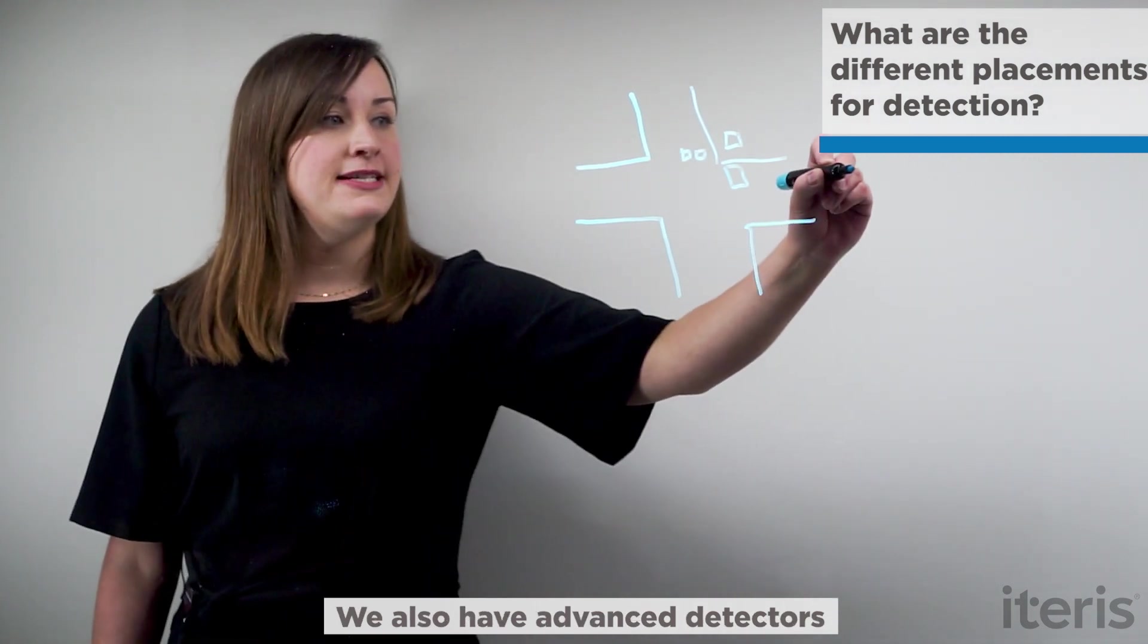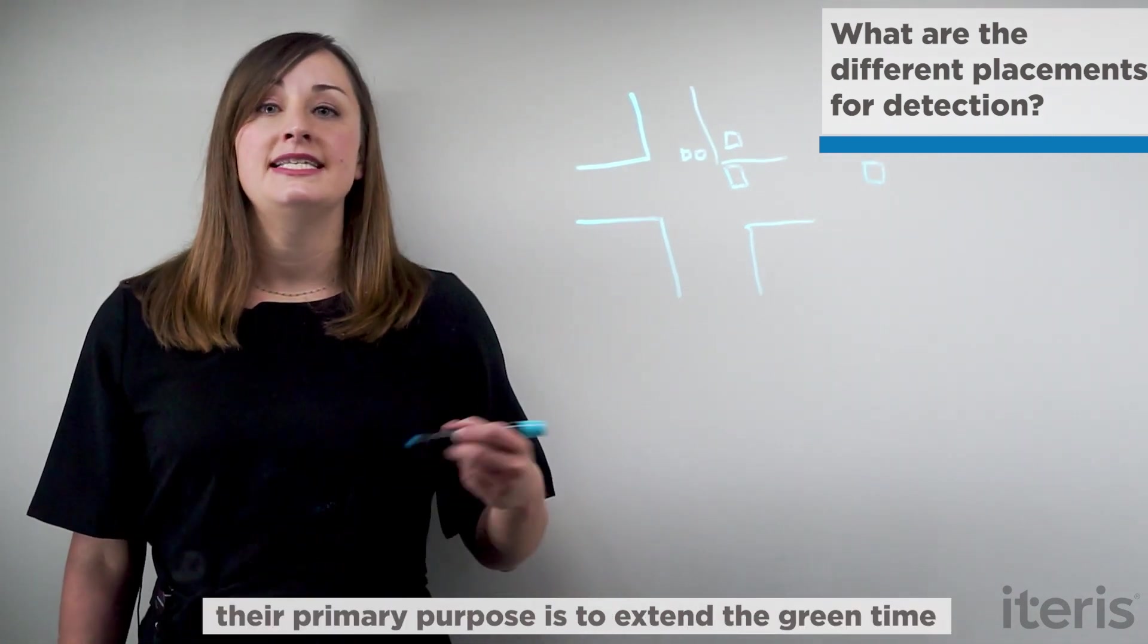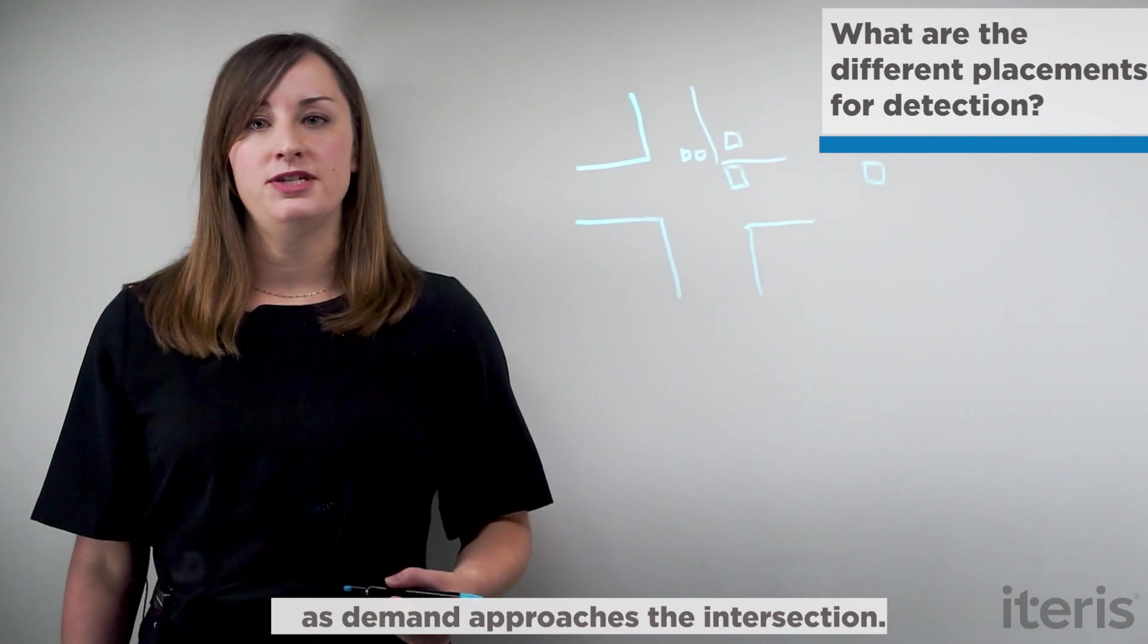We also have advanced detectors upstream of the stop bar. Their primary purpose is to extend the green time as demand approaches the intersection.